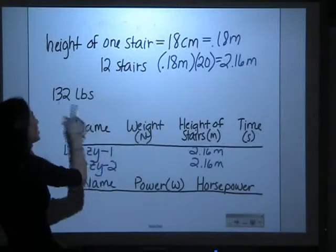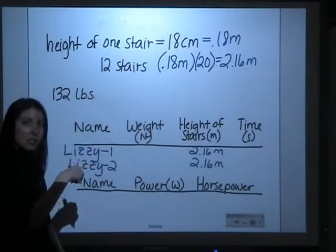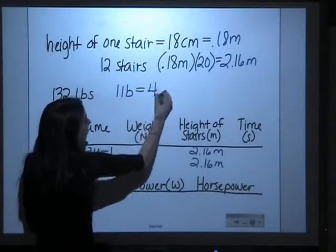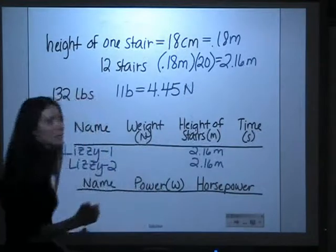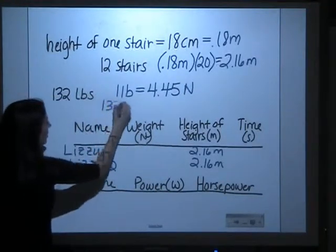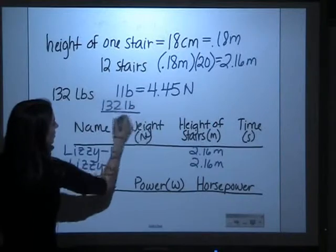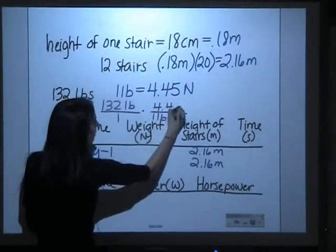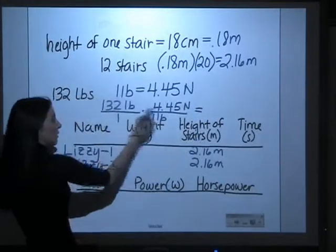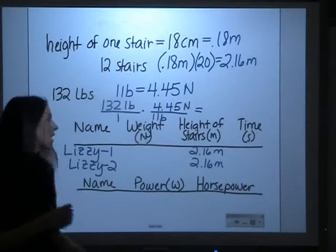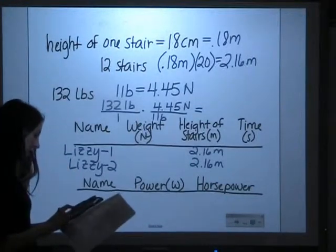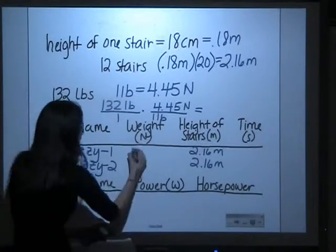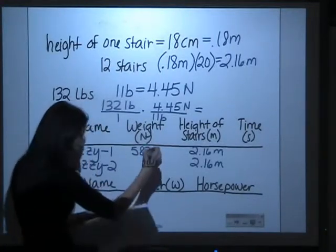Lizzie's weight in Newtons, we calculated her weight in pounds to be 132. The conversion is that one pound is equal to 4.45 Newtons. So if we do the conversion, 132 pounds, and if you multiply that one pound is equal to 4.45 Newtons, what we're doing is we're multiplying the pounds times the 4.45, and that'll give us the weight in Newtons. So for Lizzie, 132 times 4.45 gives us a weight in Newtons of 587.4.